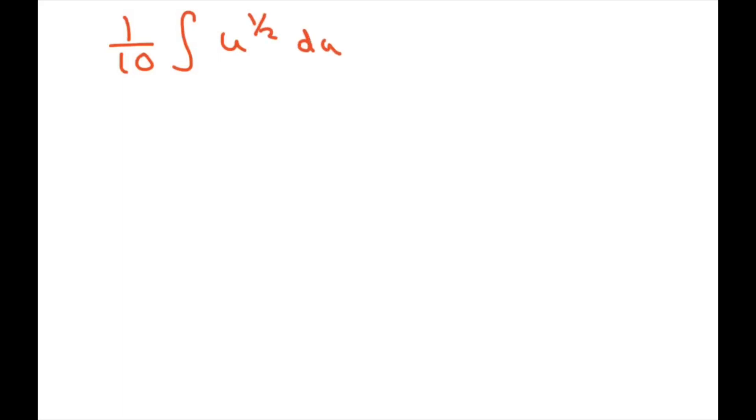So this is going to equal, remember when we do our integration, 1 tenth, and what you're doing is you're adding 1 to the u, so you have u to the 1 half plus 1, which is 3 halves. And then you divide by whatever you have there, which is 3 halves. And then you put your plus c.